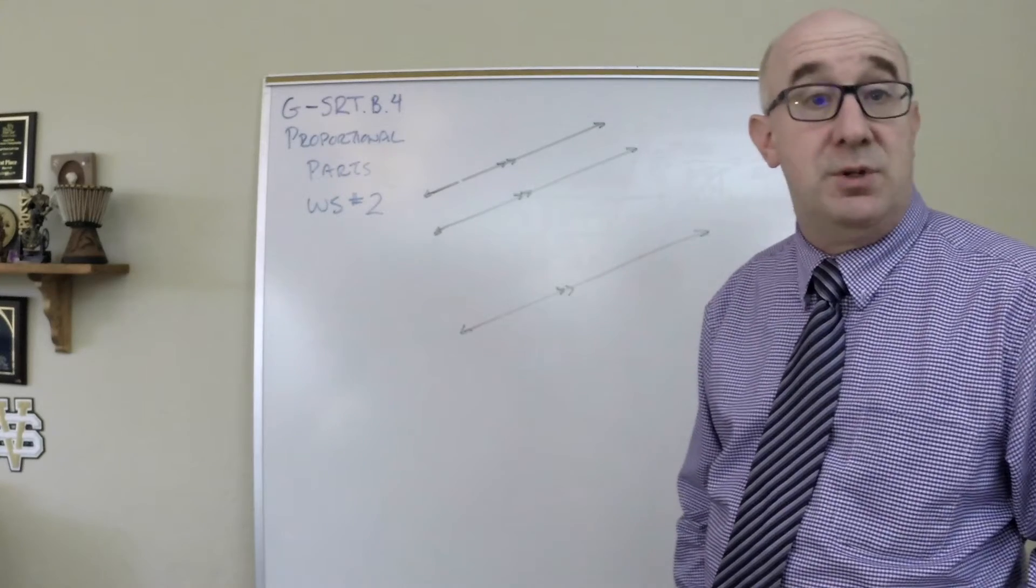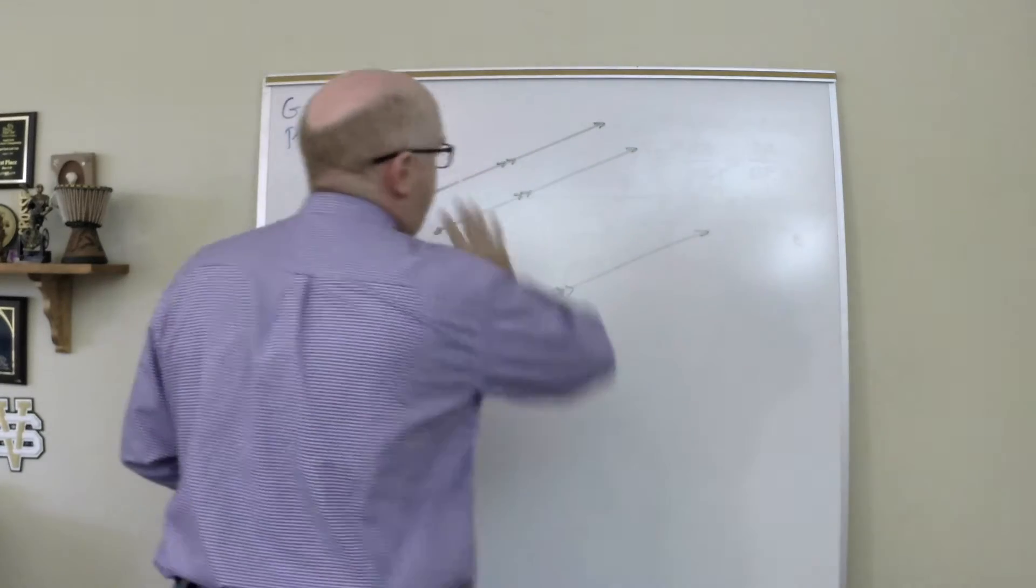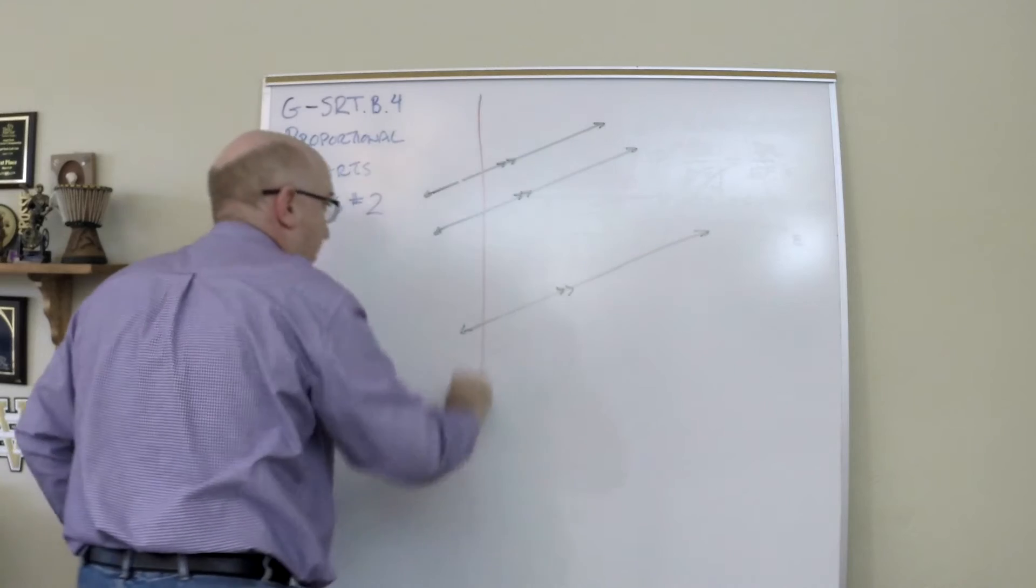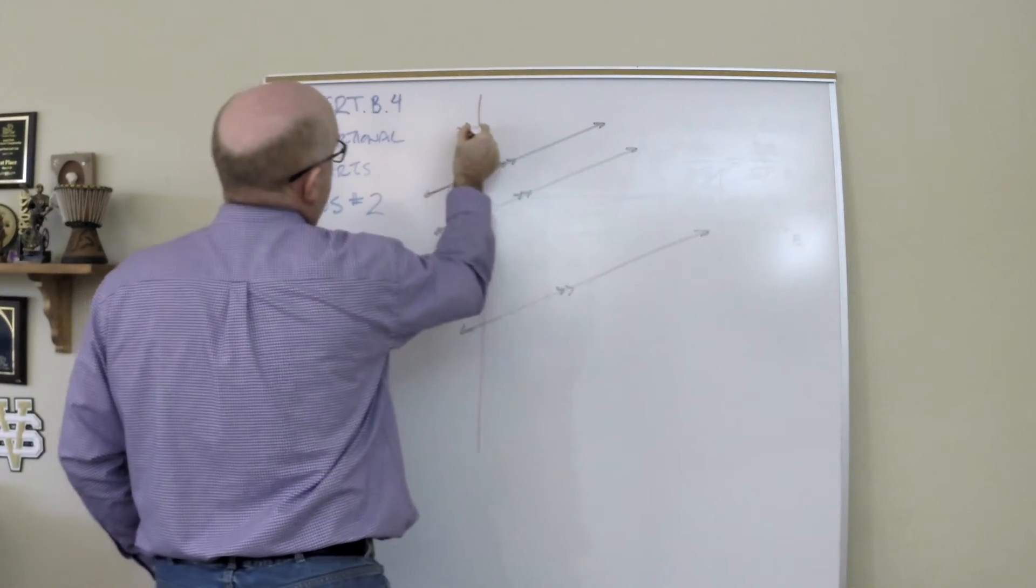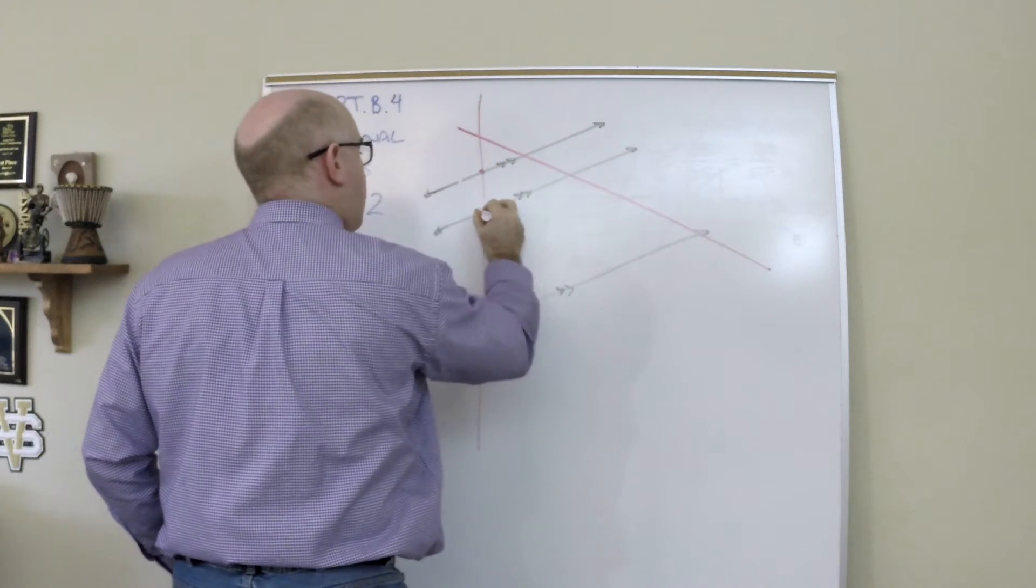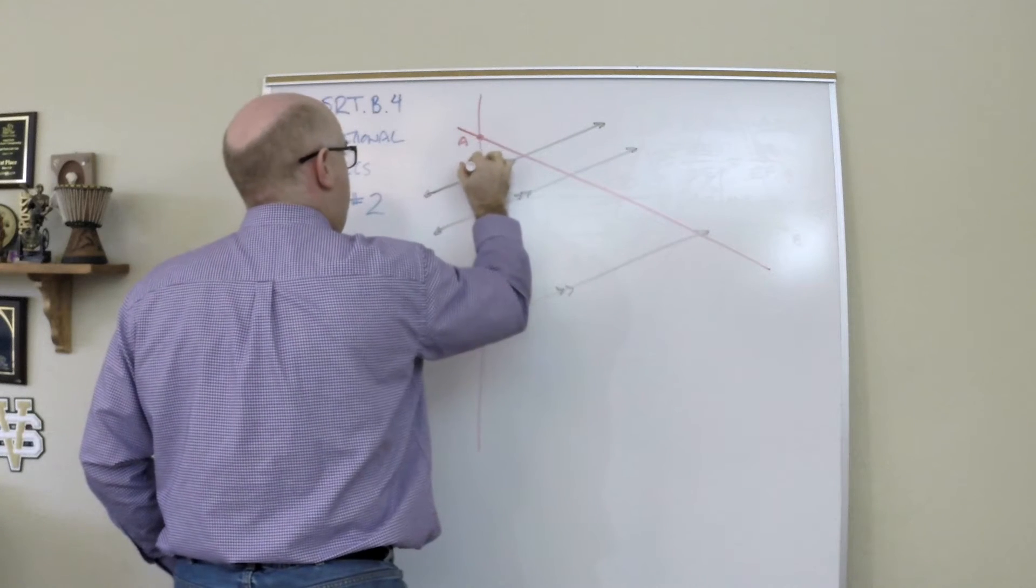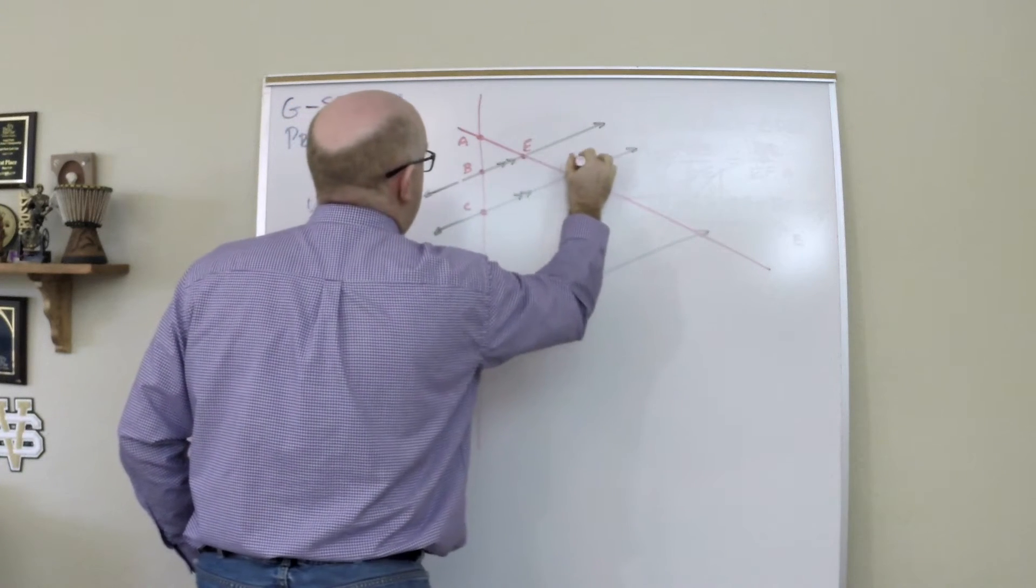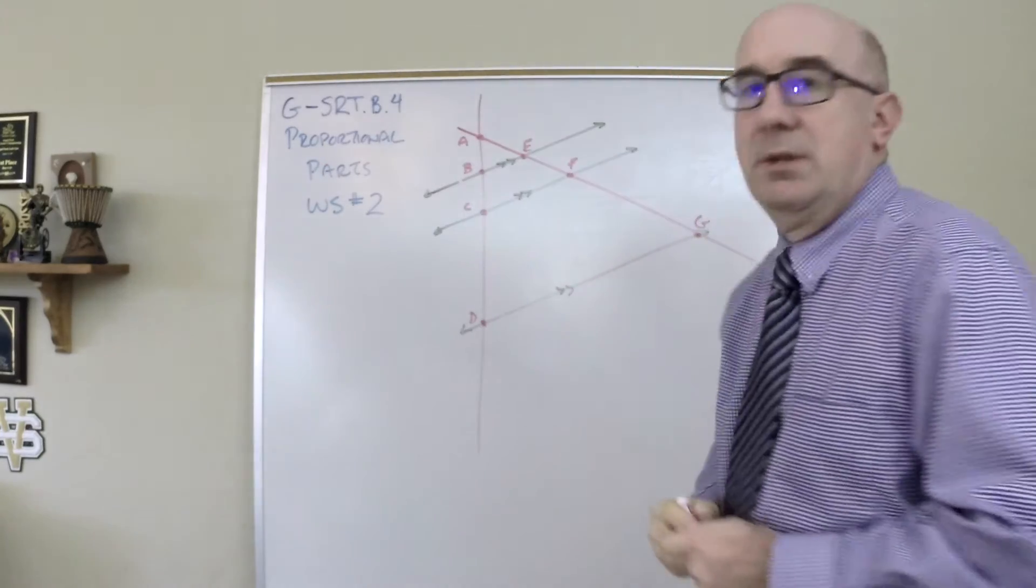Let me make a situation. Here are three parallel lines. Let's just create a transversal that does this and a transversal that does this. I'm just going to label these locations so you and I can talk about them. We'll call this A, B, C, D, E, F, G.